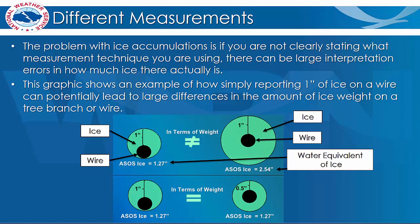Here you'll see an example of ice accumulating around a wire. This example shows the difference of one inch of non-uniform ice accumulation around one side of a wire compared to one inch of uniform ice around a wire. Both measurements could be considered one inch of ice, but the actual water weight on the uniform ice accumulation wire would be double that of the non-uniform wire. The impacts due to this water weight would most likely be substantially different.